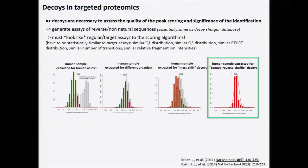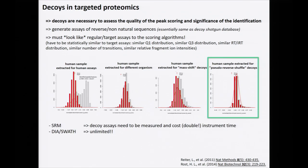In SRM, decoys must actually be measured on the instrument — counterintuitive because you spend measurement time on noise, but essential for objective, unbiased, automatic identification. You need a way to assess the chance that six transitions coelute by chance in your sample. In principle, you want to measure as many decoys as targets; if you have enough decoys, you can span them across different injections. You need enough decoys to have a reasonable estimate of the decoy distribution. In DIA it's very different — since you extract data a posteriori, you can extract as many decoys as you want.